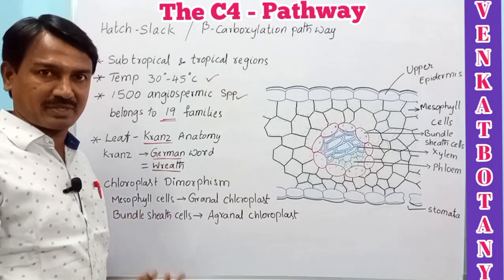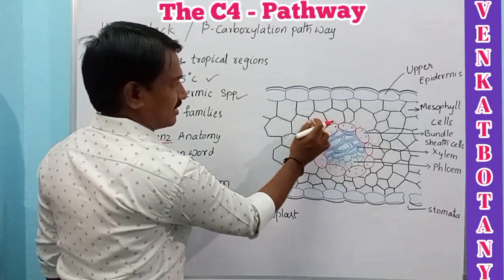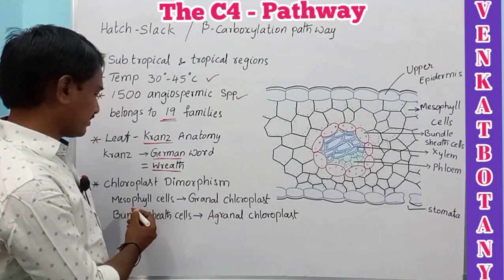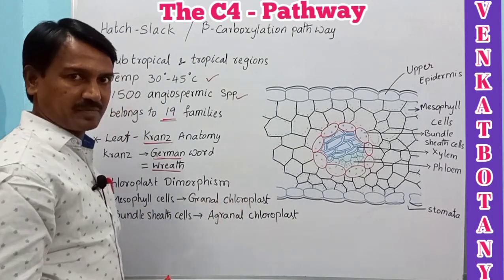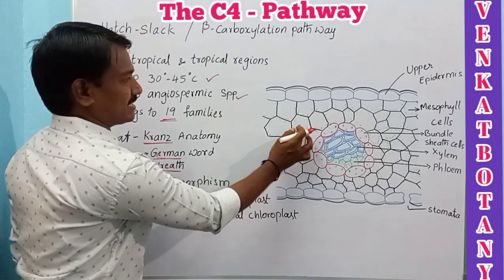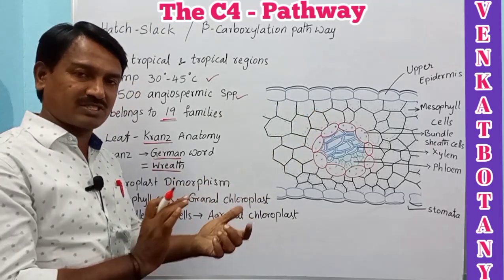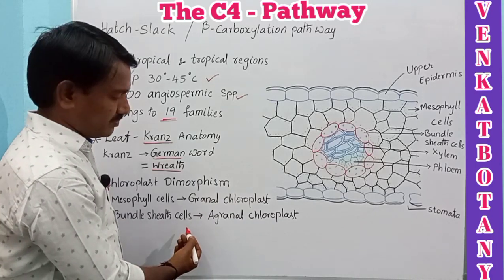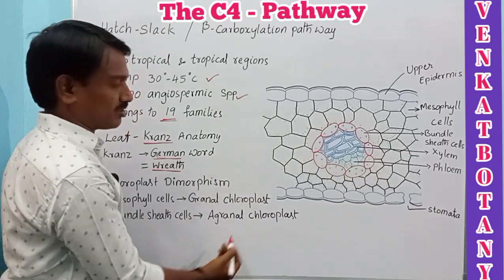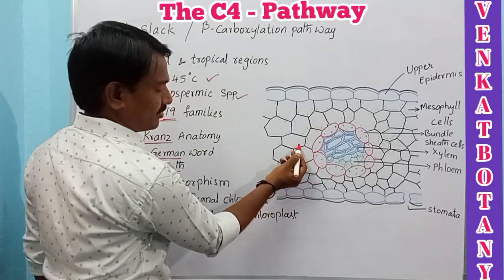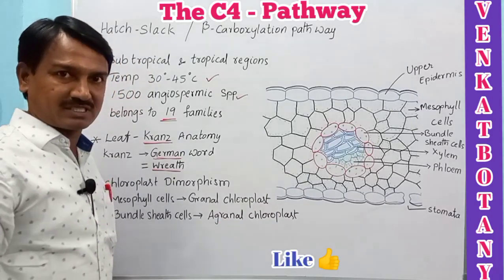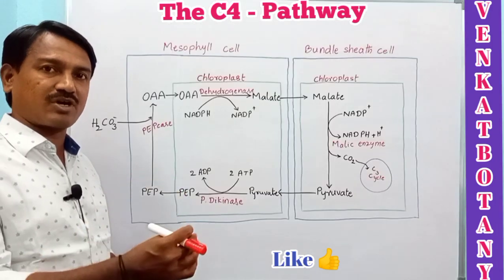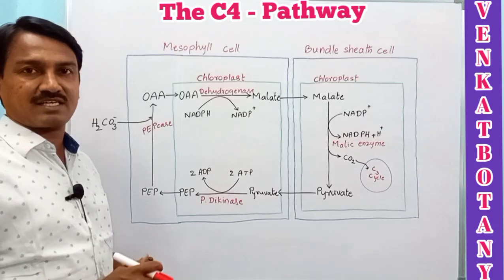C4 plants show chloroplast dimorphism — two types of chloroplasts are present. The mesophyll cell chloroplast contains grana, which are groups of stacked thylakoids. The bundle sheath cell chloroplast lacks grana and is called an agranal chloroplast. This presence of two types of chloroplasts is called chloroplast dimorphism.